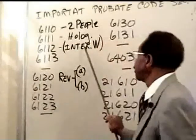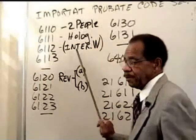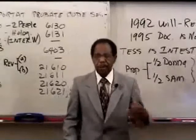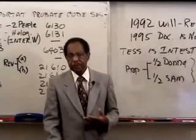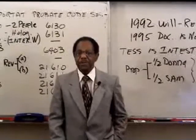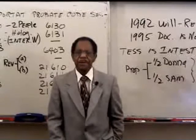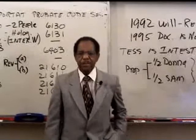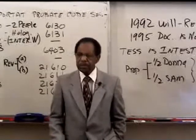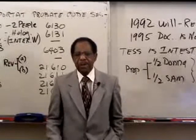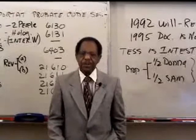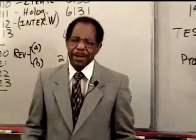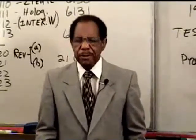What is the interested witness case about? Section 6112 says that if a person signs a will and they are one of the beneficiaries in the will, there's a presumption that the person who signed it committed fraud, undue influence, menace, or duress. So if someone gives you a million dollars in the will and you sign as one of the witnesses, there's a presumption against you — that you committed fraud, menace, or undue influence.